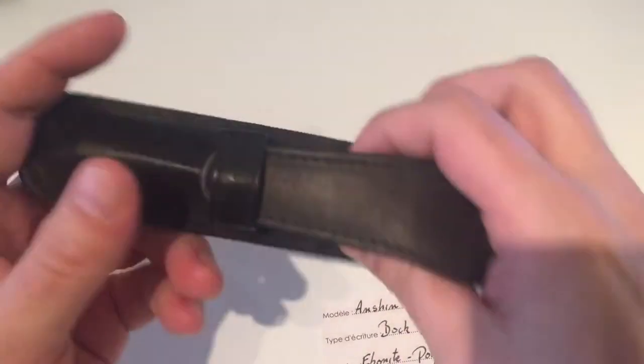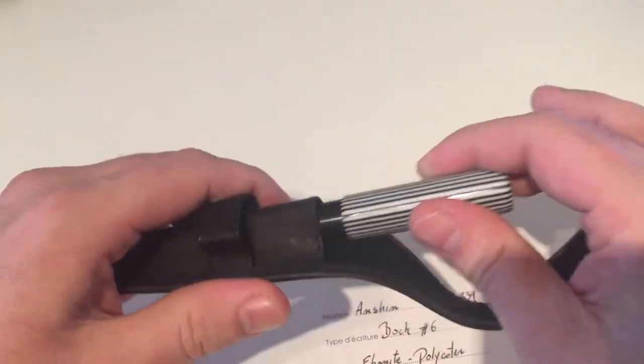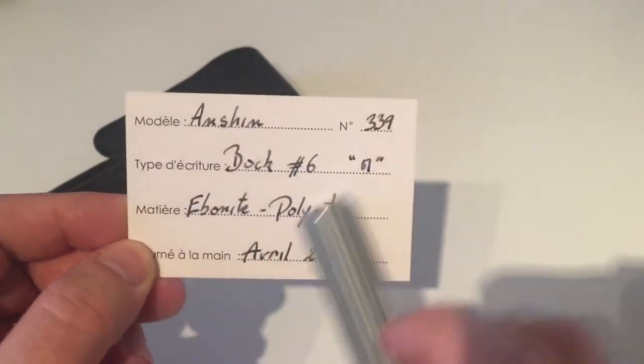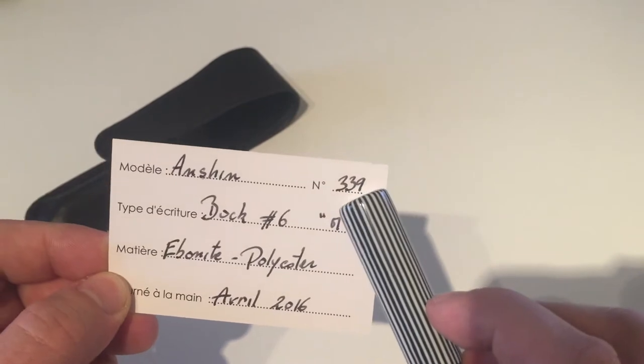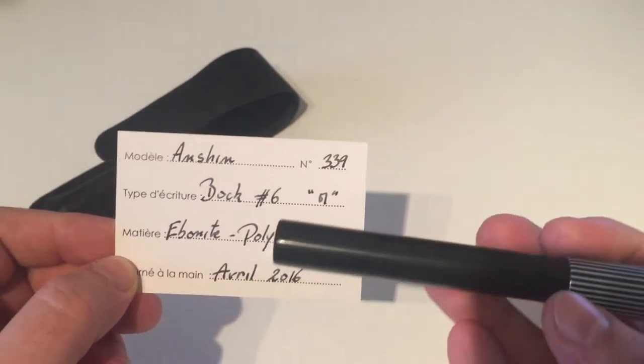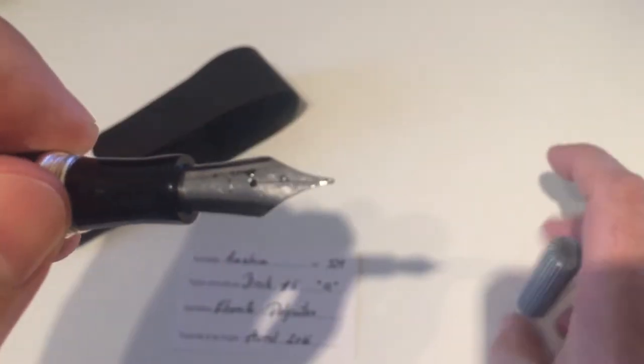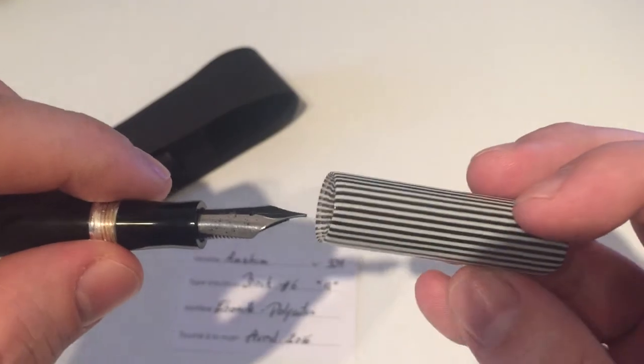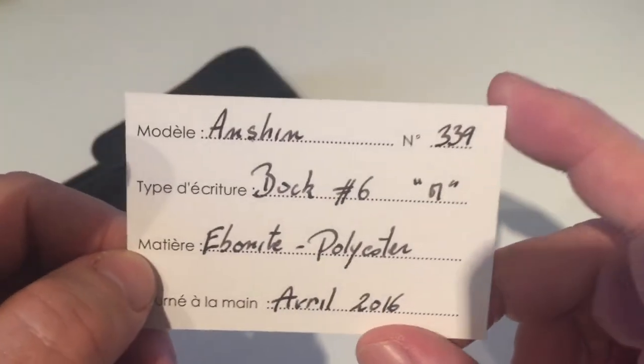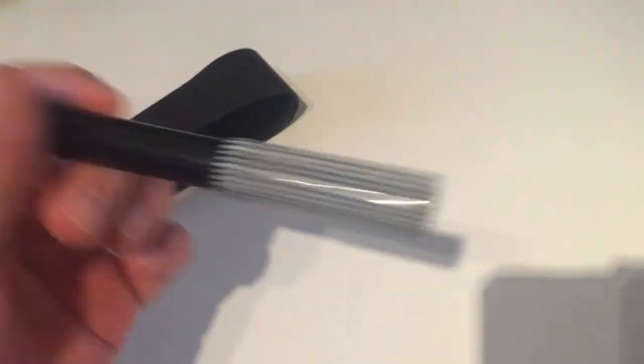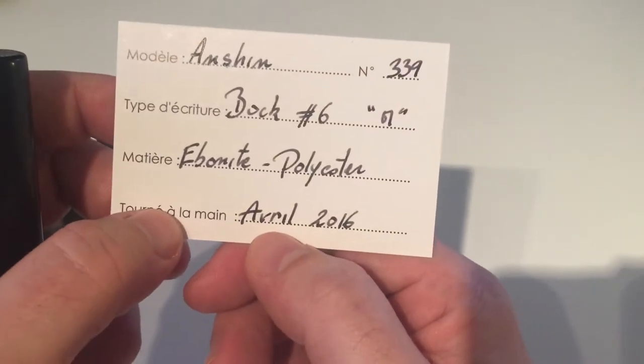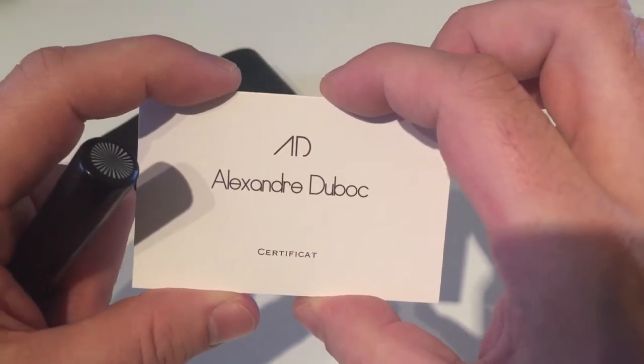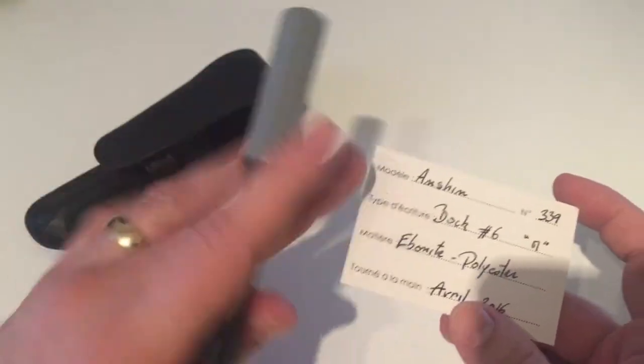Today we dive into this pen here that came in this leather sleeve or pouch here, which is kind of nice. And this pen here is called Anshin. It's the, I believe, 339th pen that he has made. It says here that it has a Bock No. 6 medium nib. I'm fairly certain that from what this nib here looks like, it's a Jovo nib, but that's just me because that's normally what normal Jovo nibs and feeds look like. But anyway, it's ebonite and polyester pen. So the barrel is ebonite and the cap here is polyester, sort of a plastic. And Tournée à la main, it's handmade in April 2016. And this is the Alexandre Duboc certificate of authenticity of that pen when he has made it and all that.